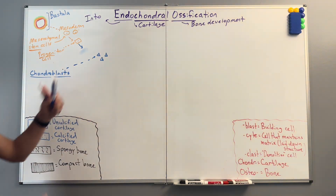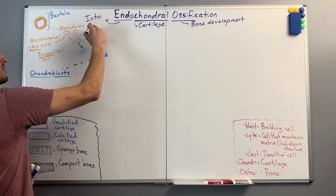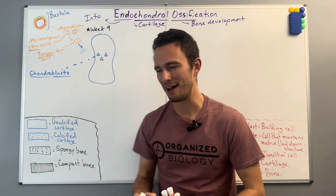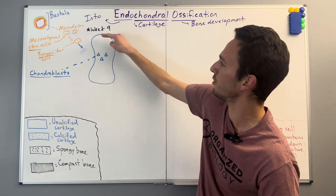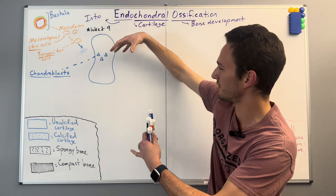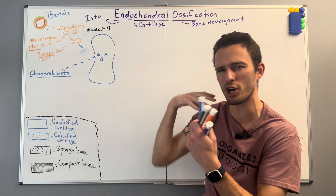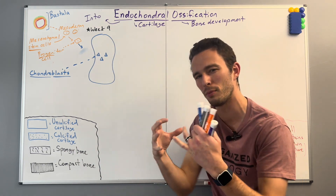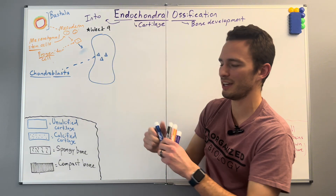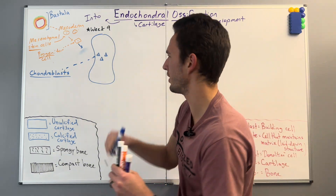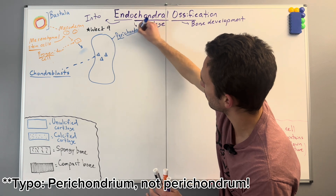That's exactly what these chondroblasts are going to do around week nine of development. We've got our chondroblasts laying down basically this model of cartilage. We've got the outermost part of some connective tissue, and then the inside part is this uncalcified cartilage — so it's not very hard yet, it's actually kind of malleable, kind of like a medium hard plastic. And it's secured in place by something called the perichondrium, literally translating to the outside of the cartilage model.